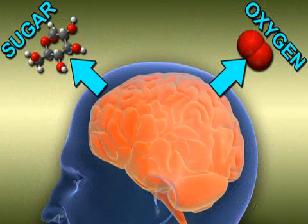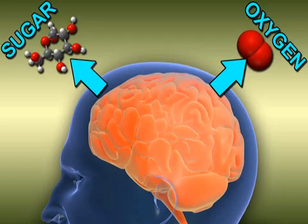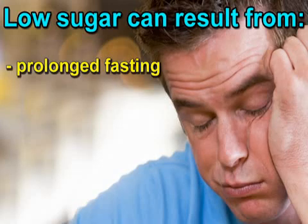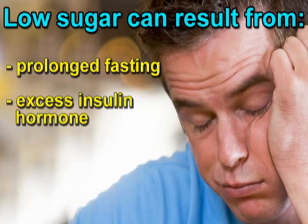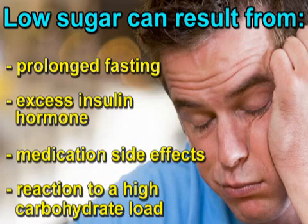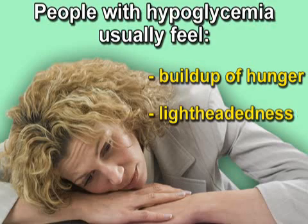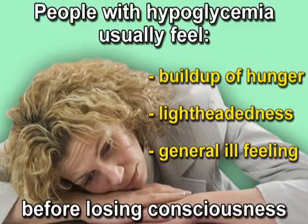But it does require that medical professionals look into what is causing the fainting. In other cases, loss of consciousness can stem from a loss of one of the brain's two vital fuels, sugar and oxygen. Excessively low sugar is called hypoglycemia and can cause loss of consciousness. Low sugar can result from prolonged fasting, excess insulin hormone, medication side effects, or a reaction to a high-carbohydrate meal. People with hypoglycemia usually feel a buildup of hunger, lightheadedness,